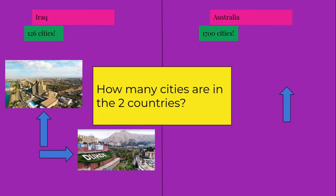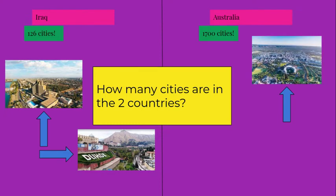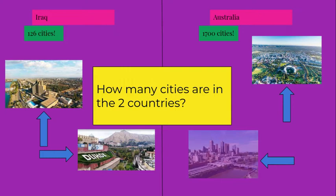Baghdad is the most popular city in Iraq but the most popular city in Australia is Melbourne. And I'm pretty sure that the best city in Australia is Adelaide because it has amazing views and a great community.